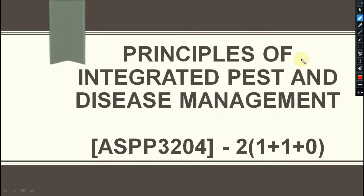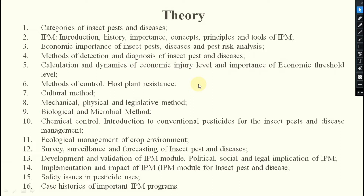Hello everyone, today we are going to discuss the syllabus of the new course: Principles of Integrated Pest and Disease Management. This is a pathology course, ASPP 3204 — third year, second semester, sixth semester, fourth number course of plant pathology. It is a one-plus-one credit hour course, divided into two parts: theory and practical. In the theory portion, we have 16 course outlines.